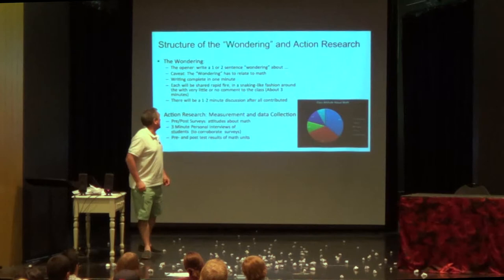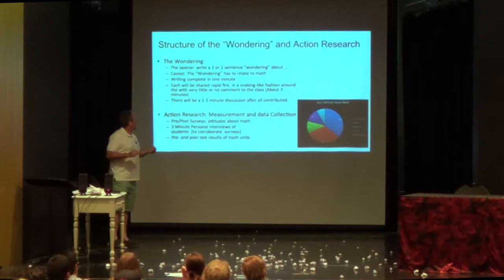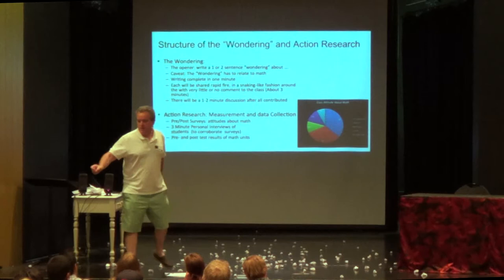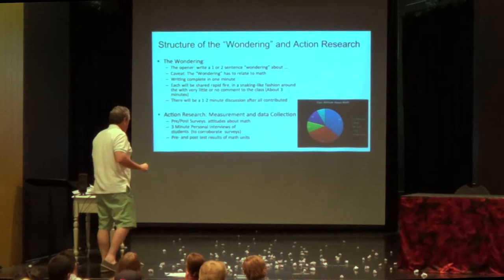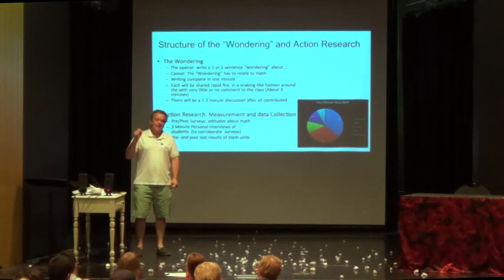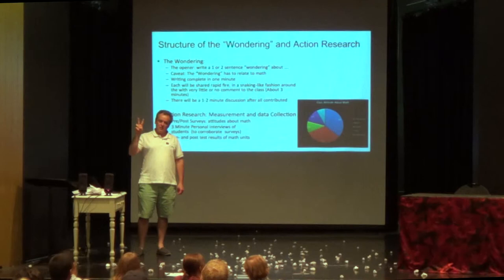The structure I set up was: I had them write one or two sentences that had to relate to math. They had to complete the writing in one minute so that each one would be shared. I would just go around, and he would wonder about this, she would wonder about that, snaking around the room until they were done. Then we had a quick one-to-two minute discussion about the object and what kind of math everybody came up with. I always thought, when I first started this, that there would be so many of the same answers. This is now the third year I did this — every single class, there might be two of the same. That blew my mind, how differently kids think about math.